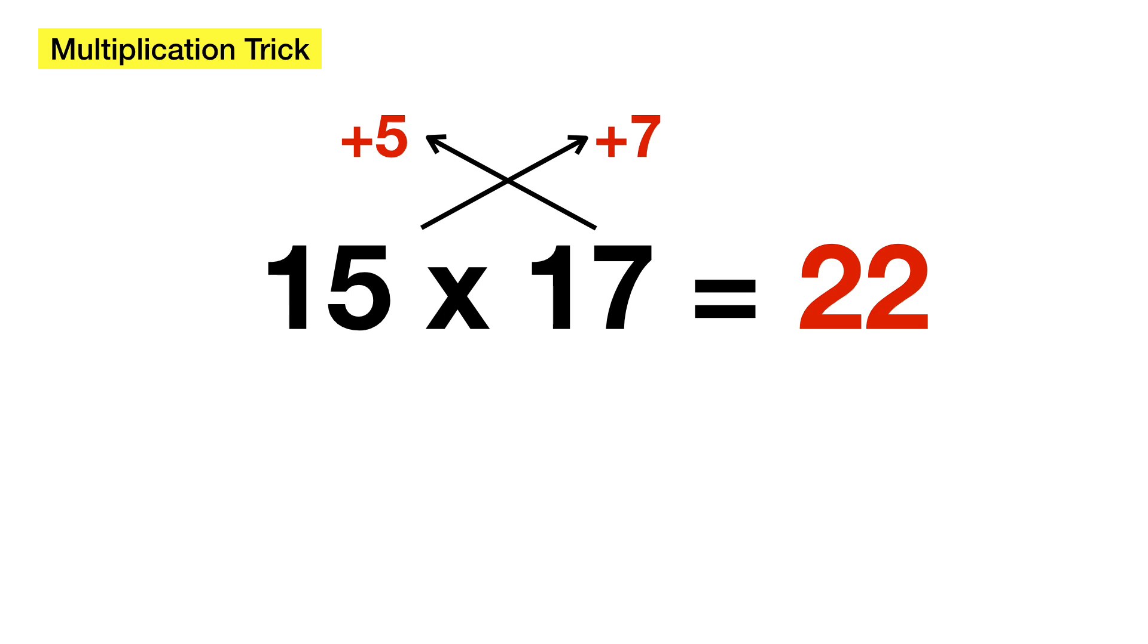But remember that we actually have to write 22 with a 0 after it. That way, it'll make the next part a lot easier to do in your head. So, let's say we have 220.